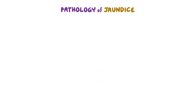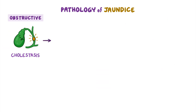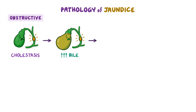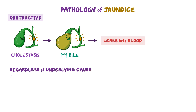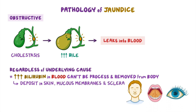Finally, obstructive jaundice results from cholestasis, which causes bile to build up in the gallbladder, and ultimately, the conjugated bilirubin in it leaks into the blood. Regardless of the underlying cause, the excess bilirubin in blood can't be processed and removed from the body, so it ends up depositing in tissues like the skin, mucous membranes, and sclera.